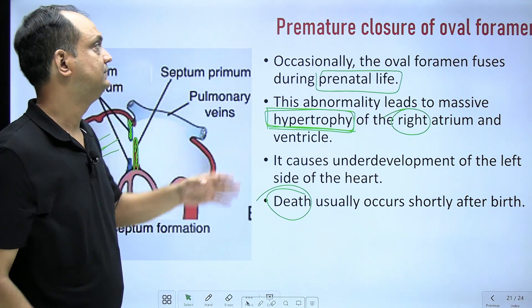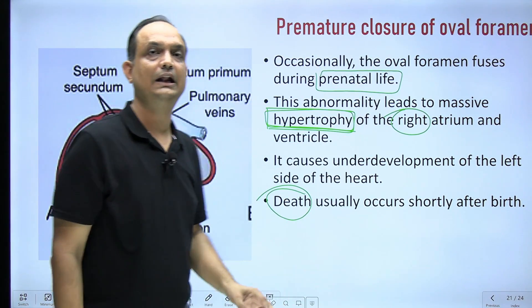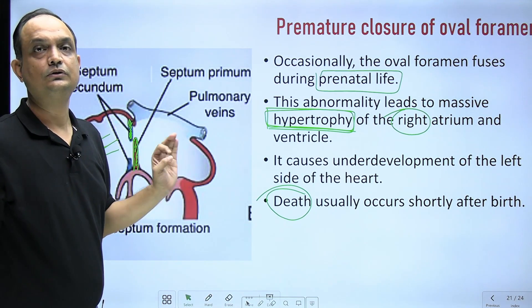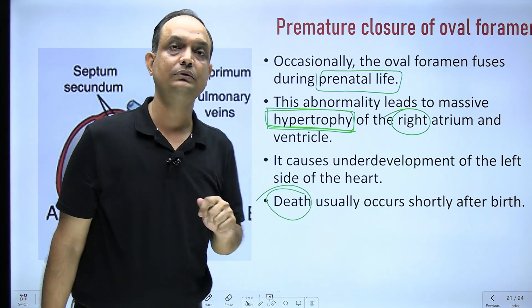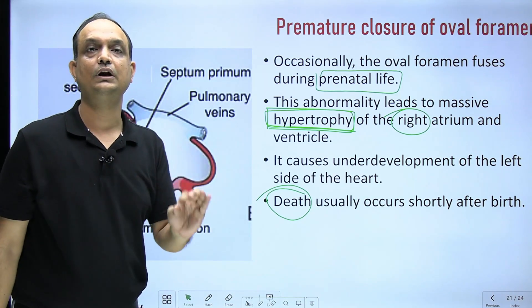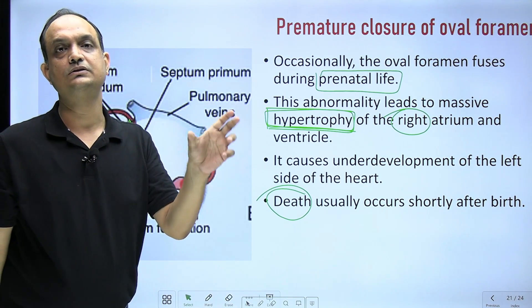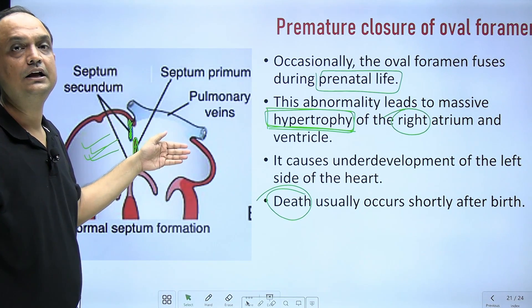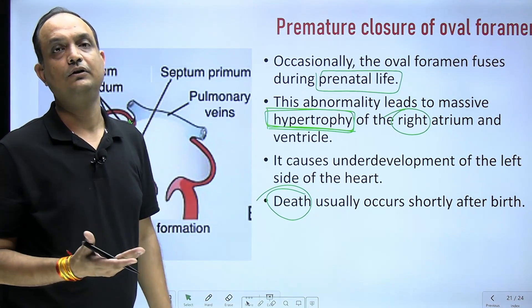If premature closure of foramen ovale occurs, the right to left shunting is absent. As discussed in the development of the inter-atrial septum, the right to left shunting must be maintained throughout the entire nine months of gestation, because this right to left shunting is responsible for the development of the left side of the heart.